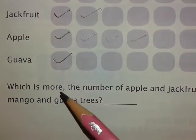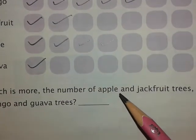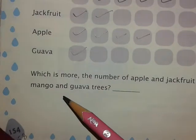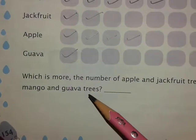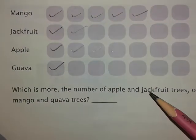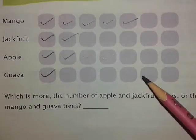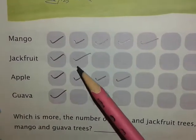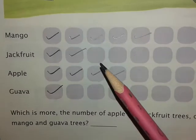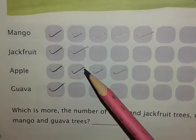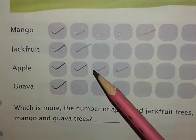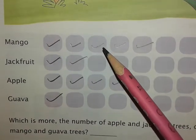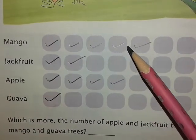Now it is asked: which is more — the number of apple and jackfruit trees, or the number of mango and guava trees? Find out the number of apple and jackfruit trees. Apple is 4 and jackfruit is 2, so the total is 6.